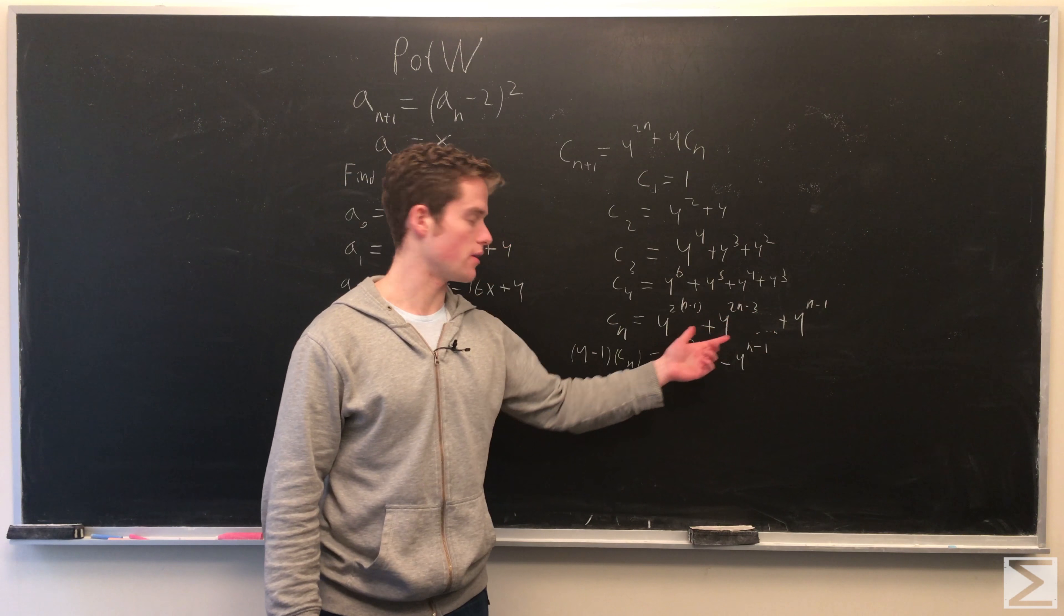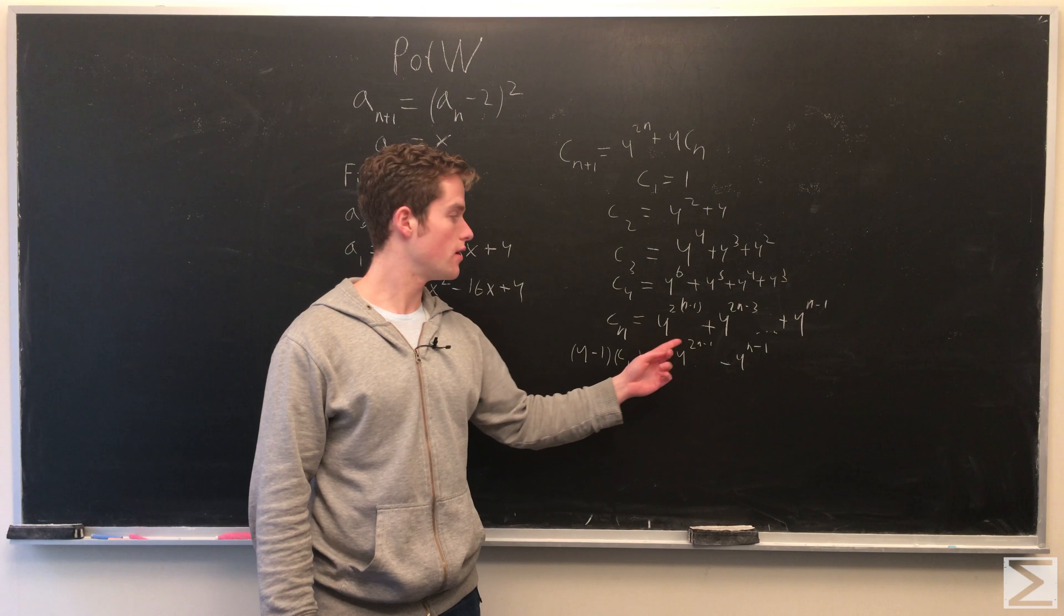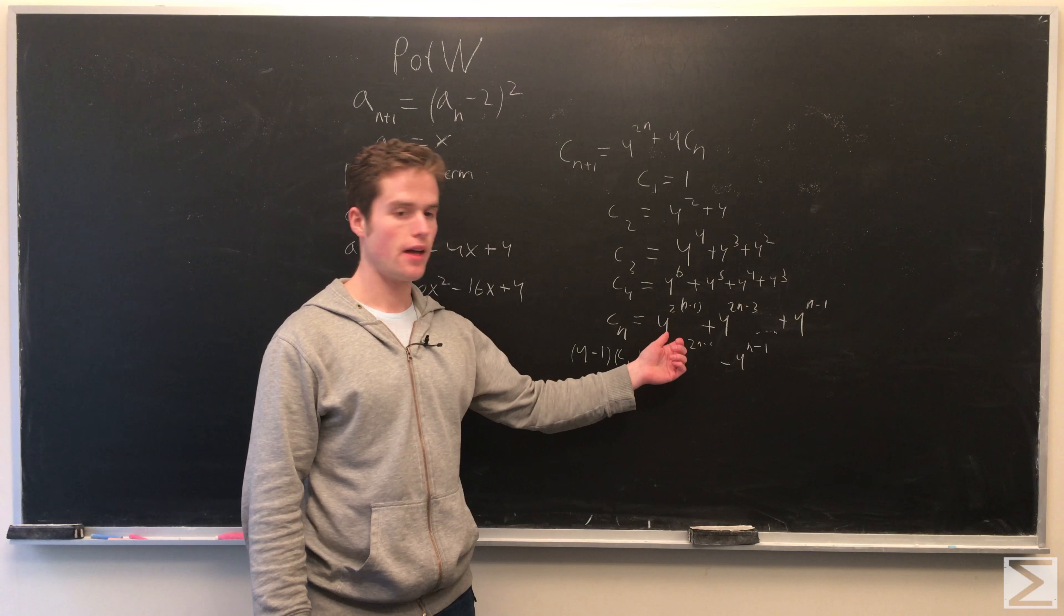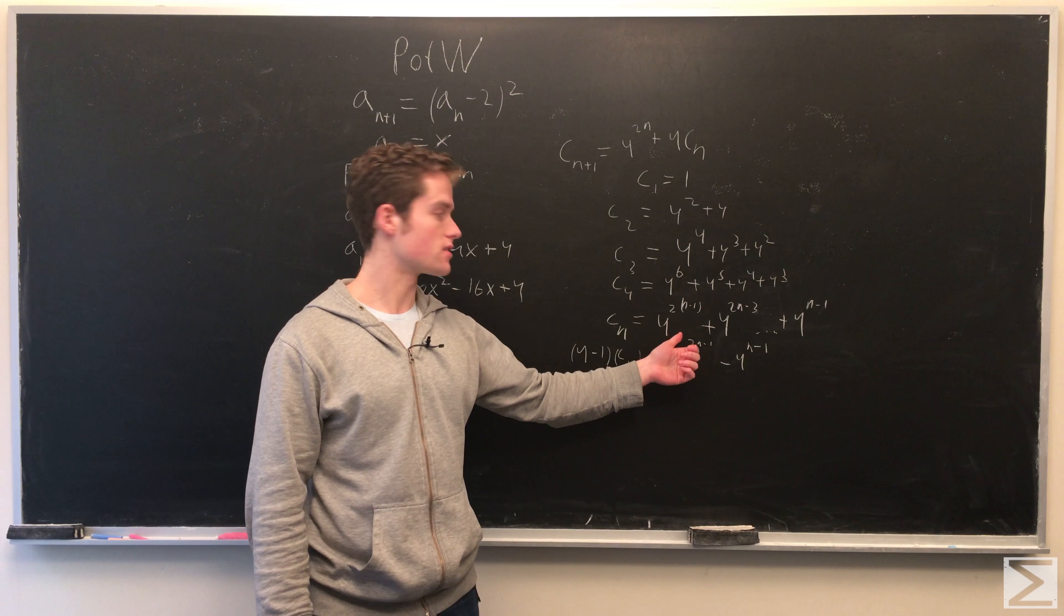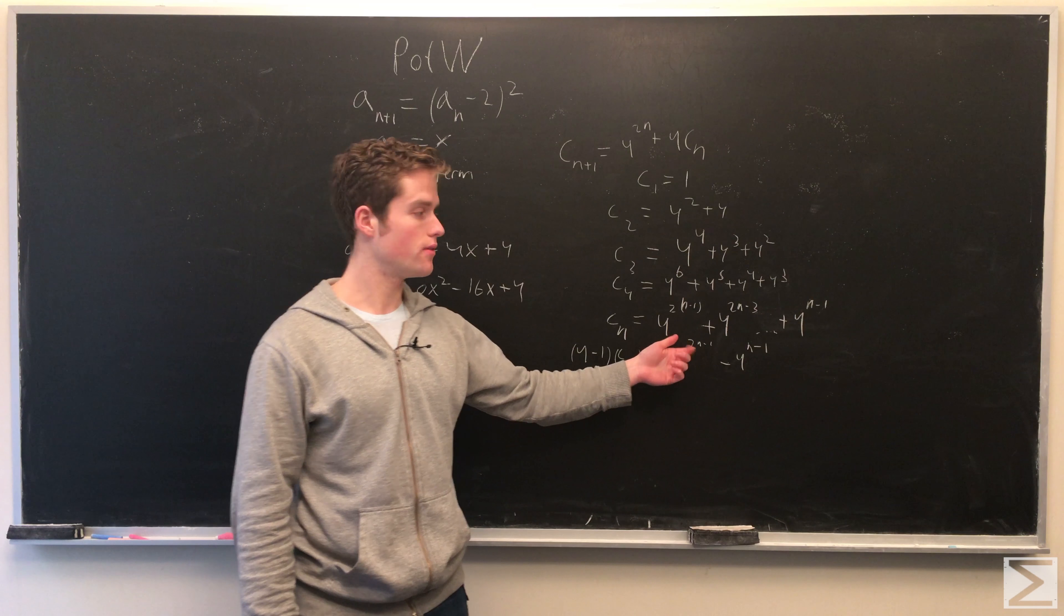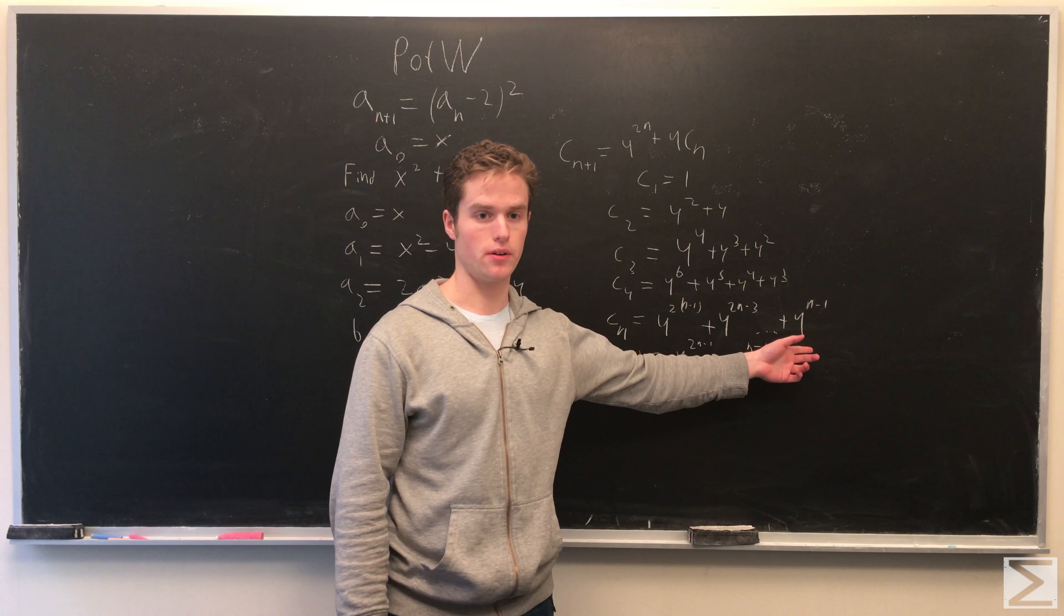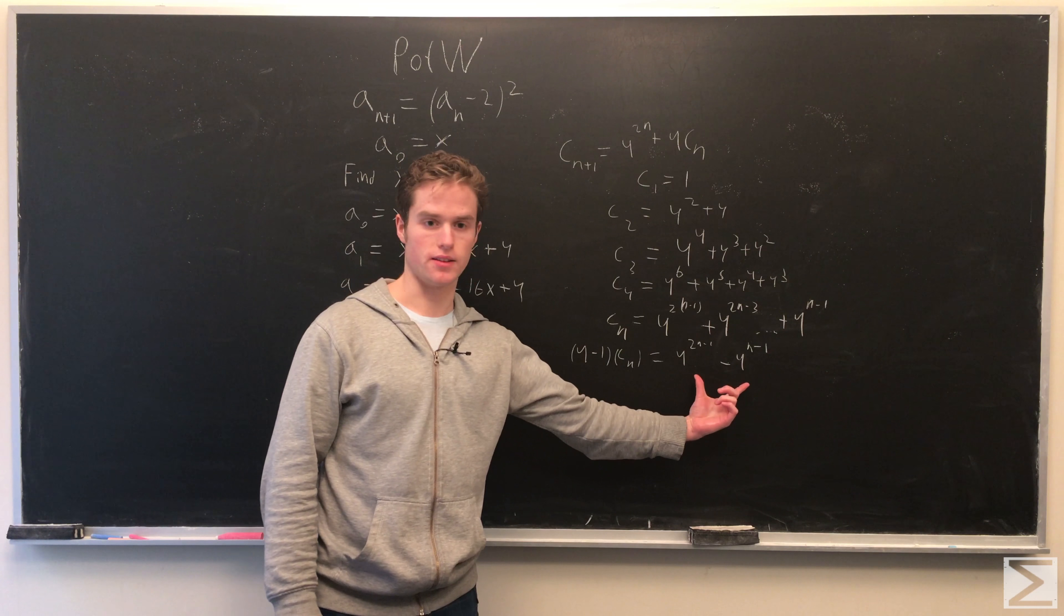So, this whole thing times 4, it moves everything up one power, and then minus 1. Every term will cancel out except for 4 times this highest power minus this lowest power. And so, we get this thing right here.